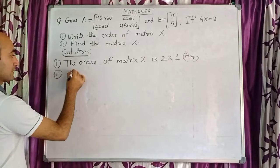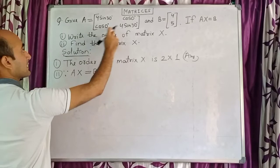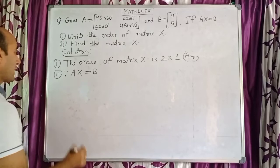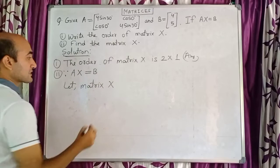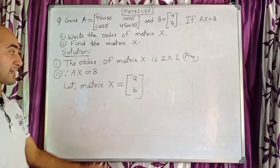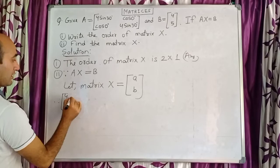Next, part 2: find the value of X. Since AX = B, the value of A is given, X is unknown, and B is given. So let matrix X equal [a, b] — a 2×1 matrix with element a in the first row and b in the second row.